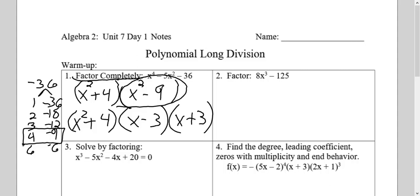Number two, the same questions. Is there a greatest common factor, something I can divide both terms by? No. I count the terms. If there are only two terms, it's either a difference of squares, difference of two cubes, or sum of two cubes.